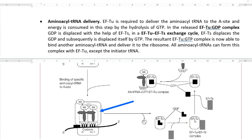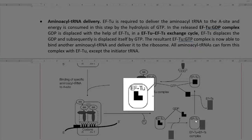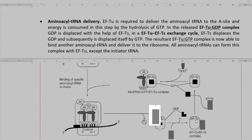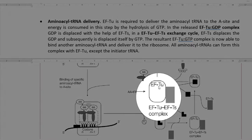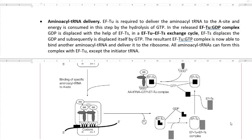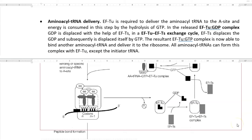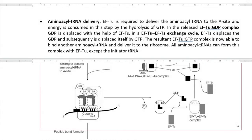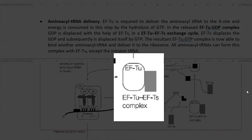Thus, after the delivery of the amino acid to the A site, the EF-TU-GTP complex is converted into an EF-TU-GDP complex. Further, the GDP can be displaced with the help of another elongation factor, EF-TS, and this involves the EF-TU–EF-TS exchange cycle as explained in the diagram. EF-TS displaces the GDP from the GDP-containing EF-TU, and the resultant complex is referred to as the EF-TU–EF-TS complex.